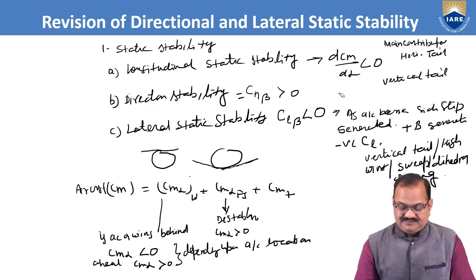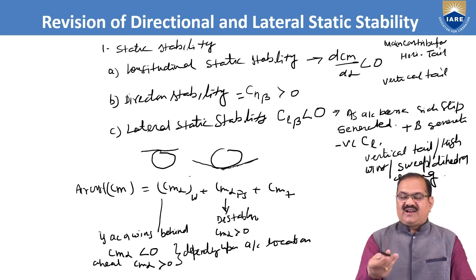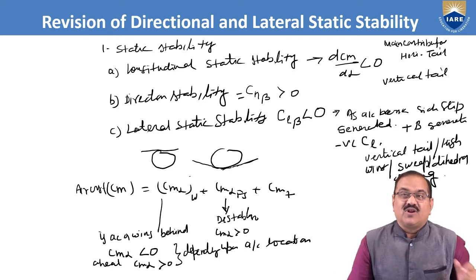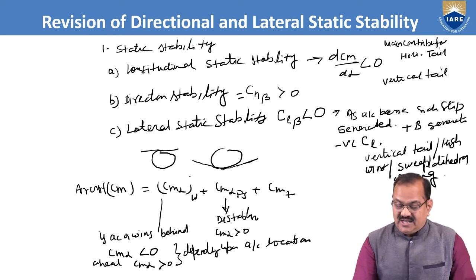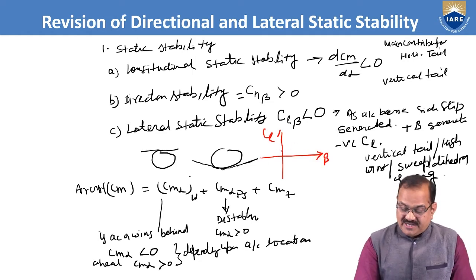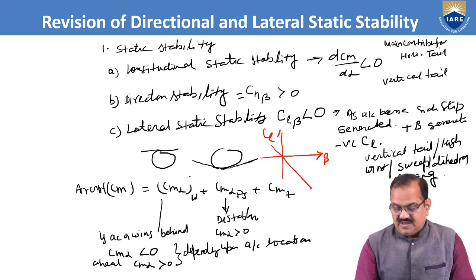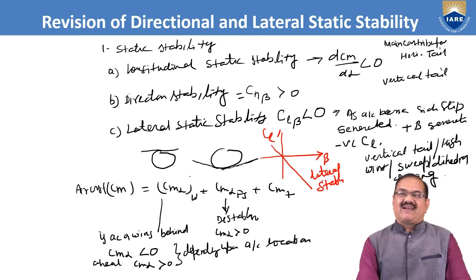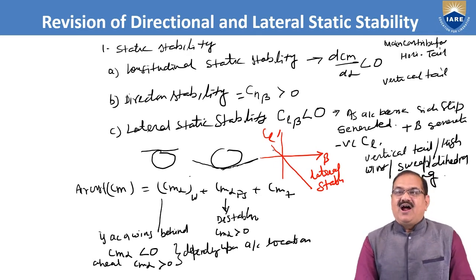For lateral static stability, which concerns rolling — if the aircraft's wings are going up and down, the aircraft is rolling. In the rolling condition, the coefficient of rolling moment Cl_beta should be less than 0. If the plot of rolling moment coefficient versus beta has a negative slope, the aircraft is laterally stable.